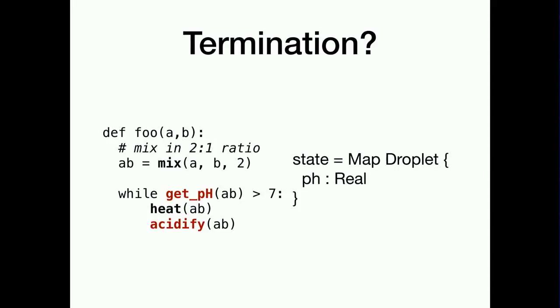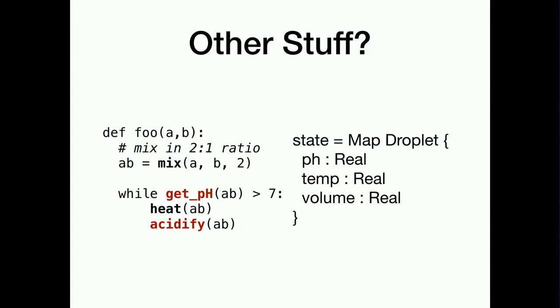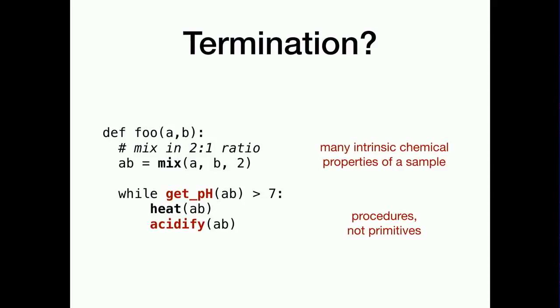And so does anyone know how much time I have? I don't have a clock. Oh, zero. All right. So I'm just going to blaze through this. Right. So I'm just going to blaze through this. Basically, if you want to reason about some parts of the program, you're just going to be totally out of luck because these things deal with physical, intrinsic chemical properties of the sample, right? So if you wanted to reason that this loop is going to terminate, you need to know that acidify is going to raise the pH and you need to know that get pH is going to get the pH. Right now, we can read this and say like, yeah, sure, this loop is going to terminate.